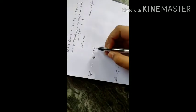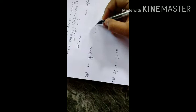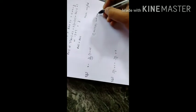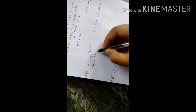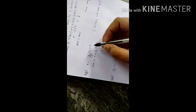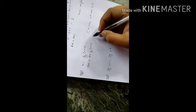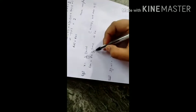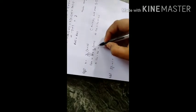The next question is: x equals 4 upon 5 bracket x plus 10. The only denominator is 5, so we multiply both sides by 5. This gives 5x equals 4 bracket x plus 10. Opening the bracket: 5x equals 4x plus 40. Transposing 4x to the left: 5x minus 4x equals 40, so x equals 40.